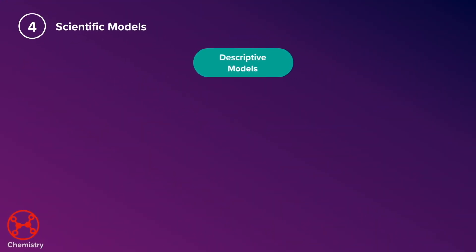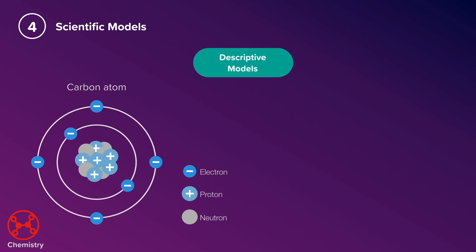Descriptive models use words and images to illustrate or help paint a picture in your mind about something. For example, we can draw the atomic structure of atoms or write chemical equations to represent reactions and the relationship between the different elements in the reactants and products.